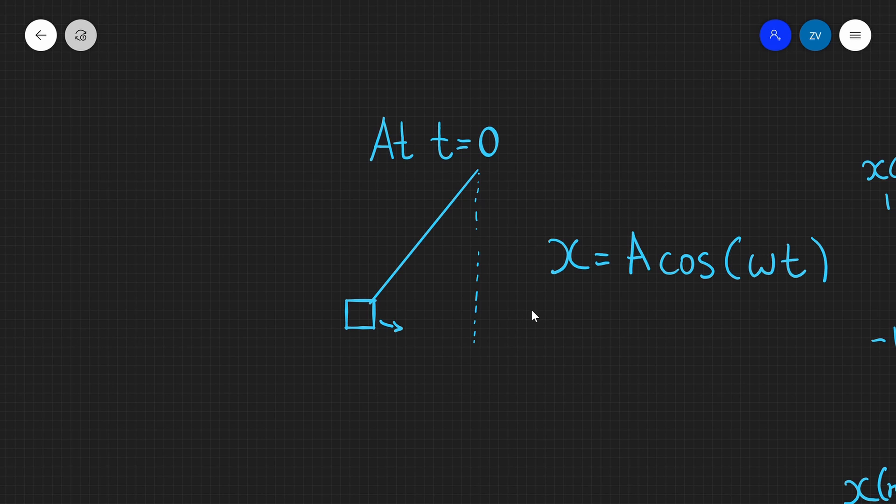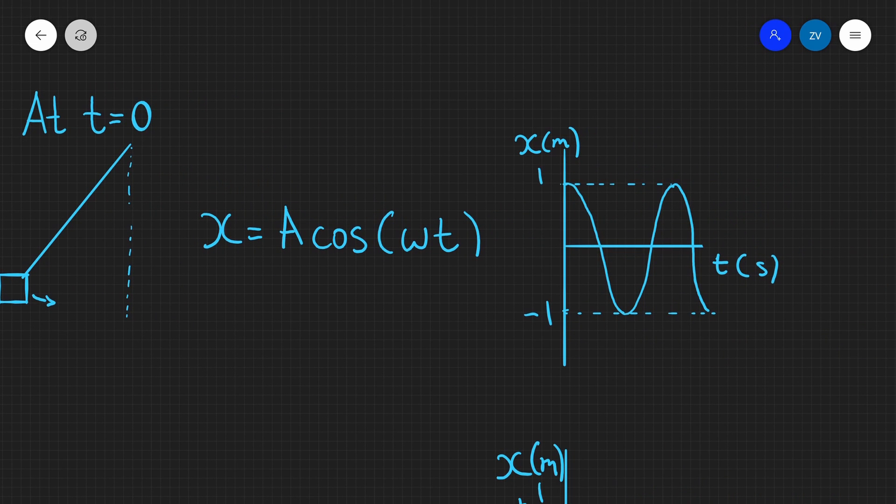Because we've started at t equals zero, we're going to be using the cosine function. The reason for that is because cosine actually has a maximum when t equals zero, and you can see that in the graph of the cosine function. So whenever our motion is at maximum at the start, we use x equals A cosine omega t.